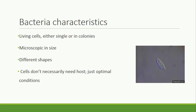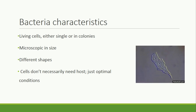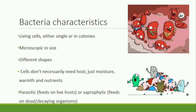Bacteria don't necessarily need a host, but just optimal conditions. Different species of bacteria thrive at different temperatures, different pHs, and with different amounts of water and nutrients. For feeding type, bacteria are parasitic, like when they infect and live in an organism, and also saprophytic, when they grow on dead or decaying organisms or inanimate objects like dirt or in water.